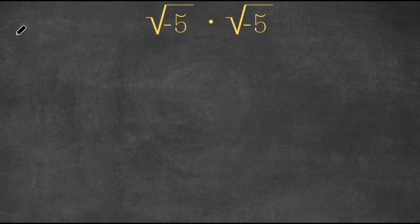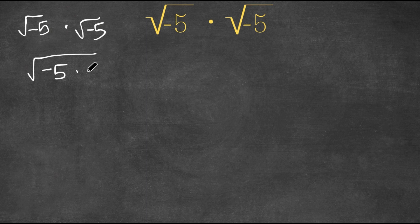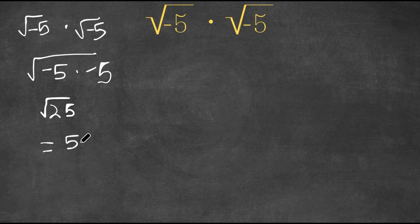What many people do is they see the square root of negative 5 times the square root of negative 5, and they simply multiply negative 5 with negative 5 under the radical. So they get the square root of 25, which is equal to 5. Many people think that 5 is the right answer. However, this is wrong.